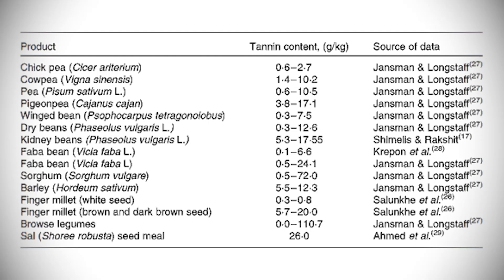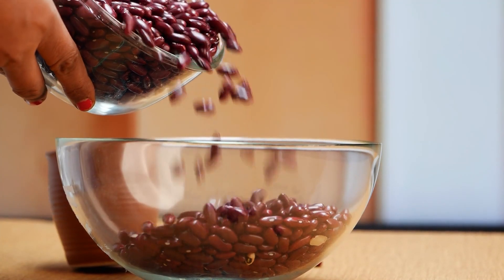Looking at a table comparing tannin content in different foods, kidney beans are probably the major culprit, with anywhere from 5.3 to 17.55 grams of tannins per kilogram. Sorghum, millet, and various other beans and peas are also on this list. In terms of treating your food to get rid of tannins, they are unfortunately pretty heat resistant, so cooking won't do much to free up the protein. Other methods people discuss include de-hulling, soaking in water or an alkaline solution, or adding compounds like polyethylene glycol or gelatin — though those last options aren't very practical.